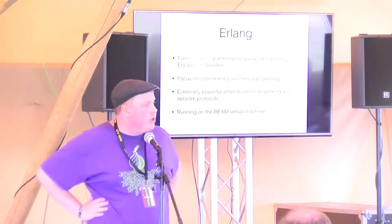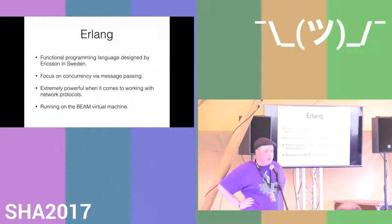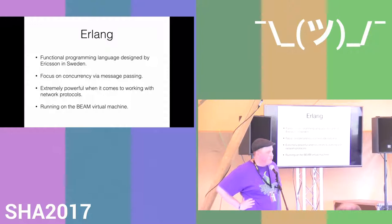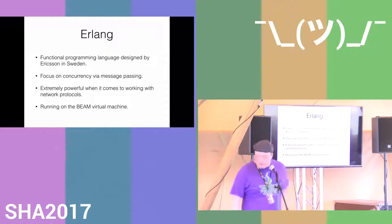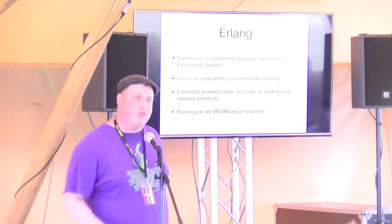Erlang is a functional programming language made by Ericsson in Sweden. It focuses a lot on concurrency where we pass data around using messages. It's based around an actor model where you design everything using different processes that communicate through message passing. It has one really neat feature: binaries. It's a way to do pattern matching from functional languages on binary structures, which is really awesome for working with network protocols — both string-based and binary protocols like Tor. It runs on a virtual machine called Beam and compiles to bytecode files.